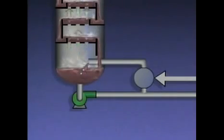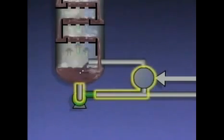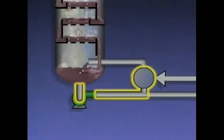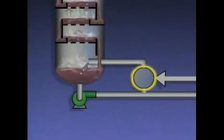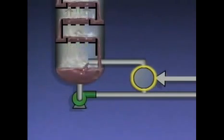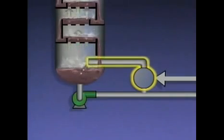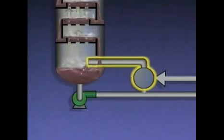Another method used to maximize product purity is called reboiling. The bottoms liquid that's drawn off from the tower is sent to a heater called a reboiler. The rest of the bottoms liquid is sent to storage or to other units in the plant as the tower's bottoms product. The reboiler heats the liquid it receives so that a mixture of vapors and liquid is formed. Depending on the system, either vapors or the mixture of vapors and liquid is then reintroduced into the tower. The hot vapors cause any lighter fractions in the liquid at the bottom to vaporize and move up the tower. This reduces the amount of lighter fractions in the bottoms product.